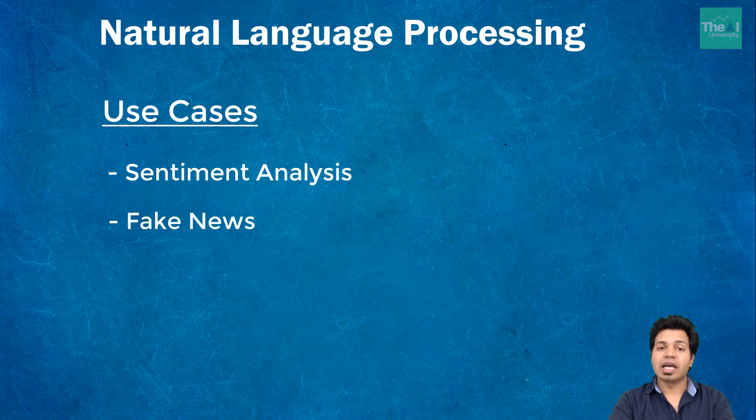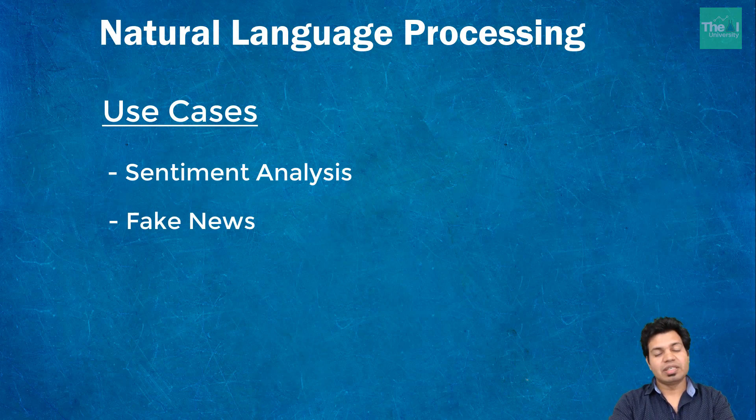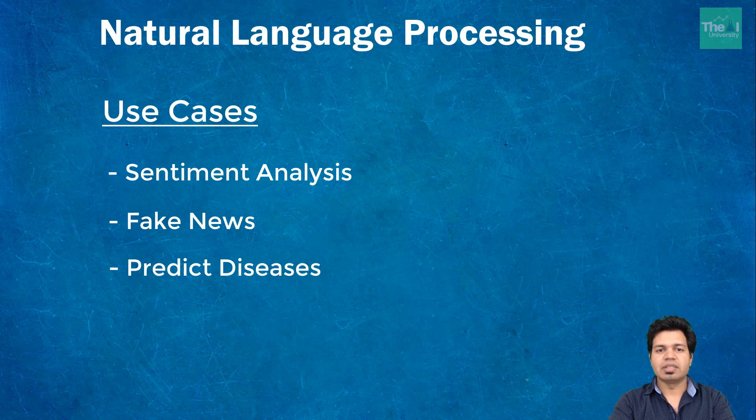Number two is fake news identification, where an NLP-based application can determine if a source is accurate or not, whether it's politically or socially biased, thereby detecting if a news source can be trusted. Number three is NLP can help recognize and predict diseases based on patient's own speech using a chatbot or through electronic health records. For example, Amazon Comprehend Medical uses NLP to extract disease conditions, treatment outcomes, and medications from patient notes, clinical trial reports, and other electronic health records.